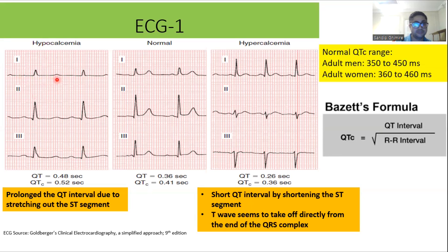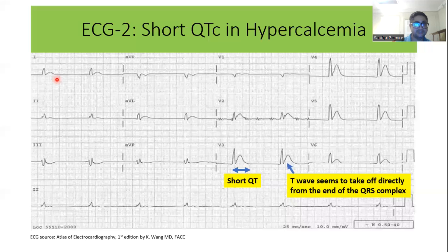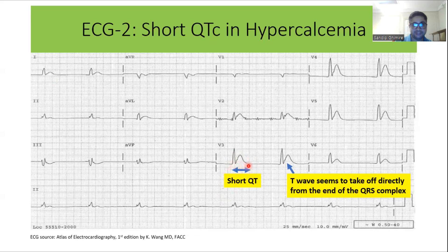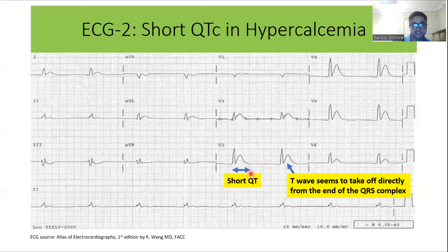This second ECG is of a patient with hypercalcemia. As you can see, the QT interval is very short, and the T-wave appears to take off directly from the end of the QRS complex. These are the typical findings in cases of hypercalcemia.